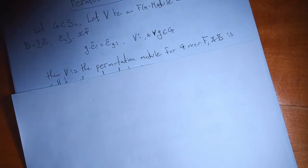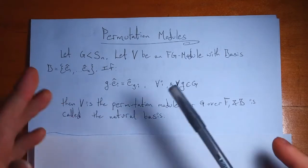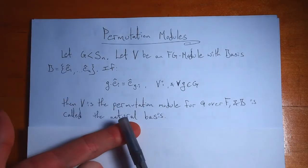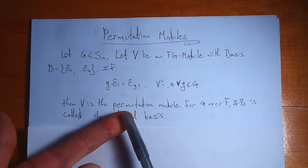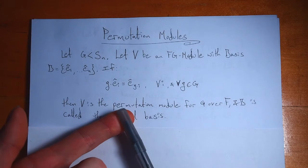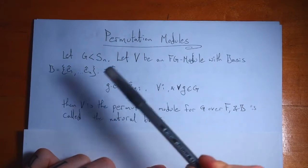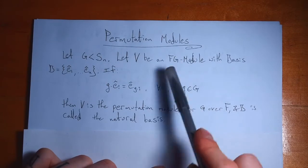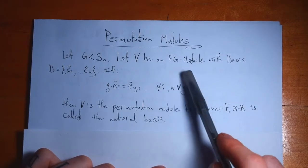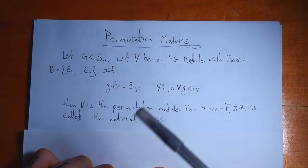So we have a representation for all groups — but of course it's not that simple. The two big shortcomings of permutation modules are: first, they're always faithful, and sometimes a non-faithful representation can give us useful information; second, the degree of the representations grows very large very fast, requiring a lot of extra work to reduce them. But this is a place to start — a way to always construct a representation for any finite group. It's quite robust, but not without its limitations.